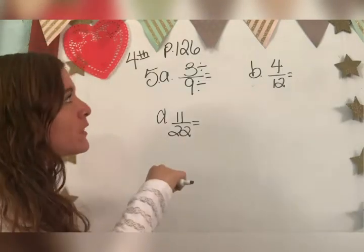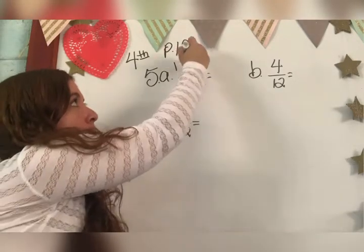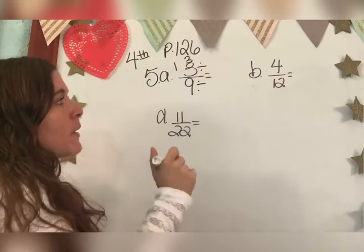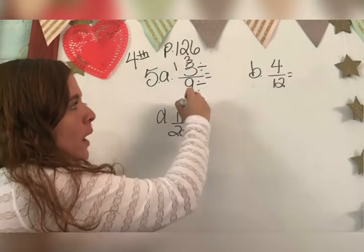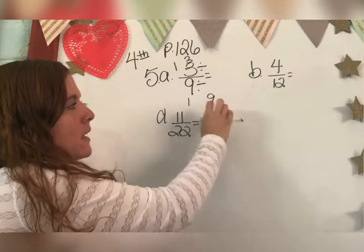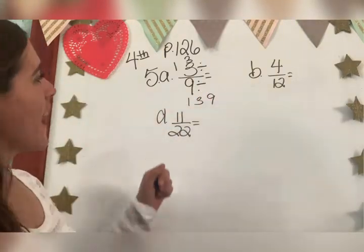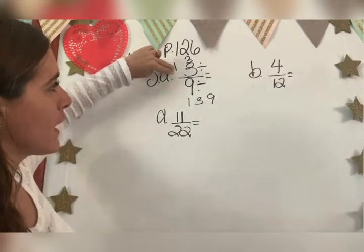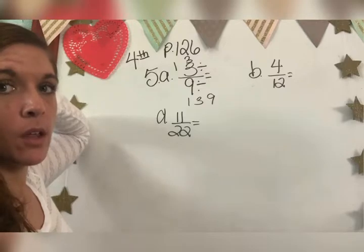Remember what we do, we do our factores. What are my factores of three, someone? One and three, right? One times three. What are my factores of nine, Keanu? One and nine, one times nine, then three times three. So what number can I divide by, Keanu? What's my greatest common factor entre los dos? Three.